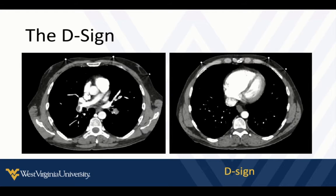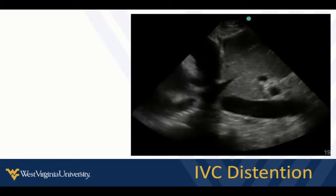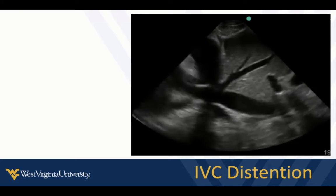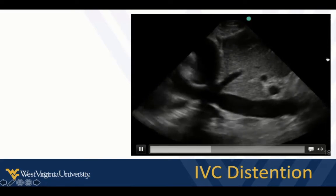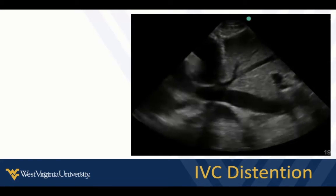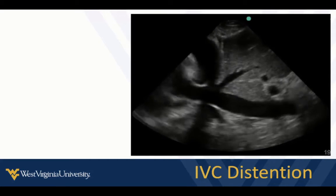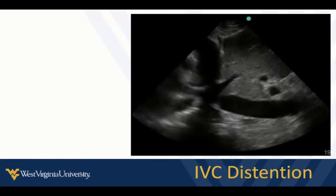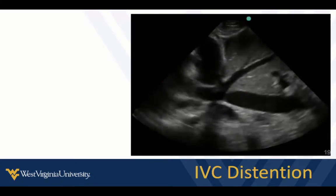This patient had PE with markers of right ventricular dysfunction, which may influence decisions around thrombolytics. The other thing you can look for is distention of the IVC. Increased right atrial pressure and right ventricular pressure from an acute pulmonary embolism is going to dilate and distend the IVC as well. If the IVC is small and collapsing, then the patient doesn't have high right atrial pressure.